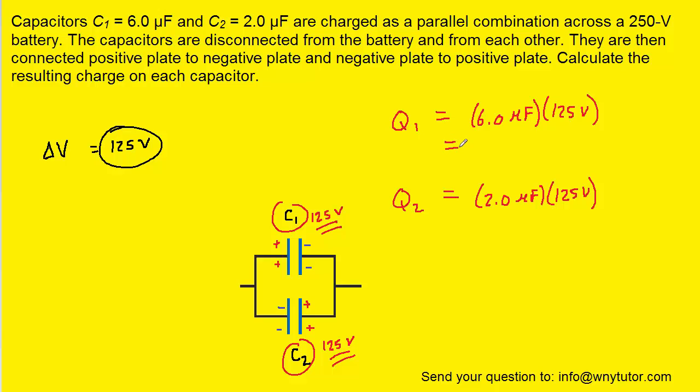So we'll plug in the known values for each capacitor. We can see that the first one, Q1, turns out to be 750 microcoulombs. And if you were asked to convert that into millicoulombs, then you can just move the decimal over three places to the left. So that would give a value of 0.75 millicoulombs. So that's the correct answer for capacitor one.